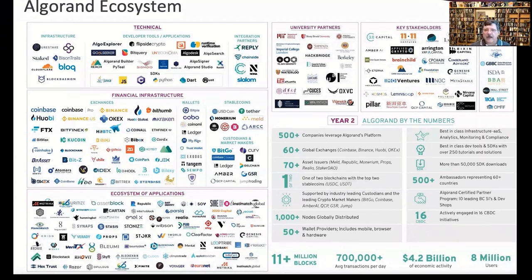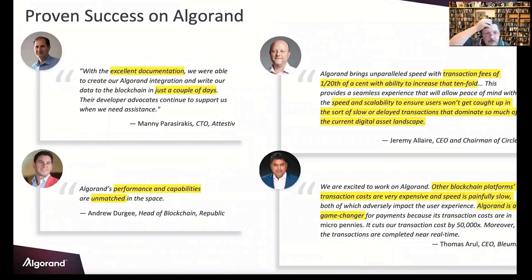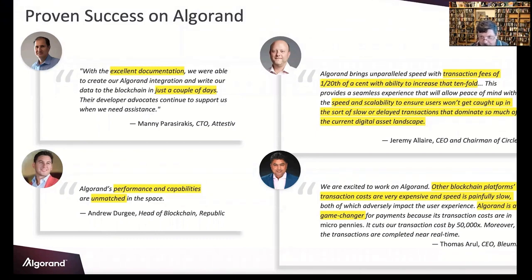Over 500 companies are now on the Algorand platform — one of the three blockchains with the top two stable coins, USDC and USDT, over a thousand-plus nodes, 500-plus ambassadors. Proven success: excellent documentation, very low transaction fees — a twentieth of a percent — and speed and scalability. Other blockchain platforms have very expensive transaction costs and painfully slow speed. Algorand is a game changer.